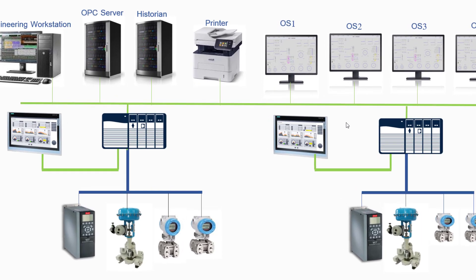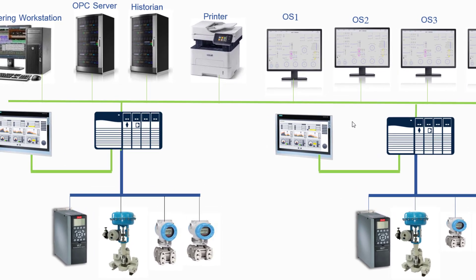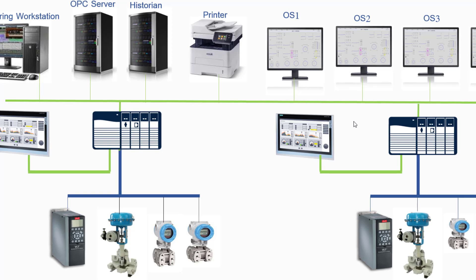Networking Infrastructure. The Networking Infrastructure comprises switches, routers, and communication protocols that facilitate data transmission between field devices, PLCs, HMIs, OPC servers, and the Historian. It ensures reliable and secure communication within the SCADA system, often utilizing Ethernet-based protocols such as TCP/IP or industrial protocols like Modbus and Profibus.